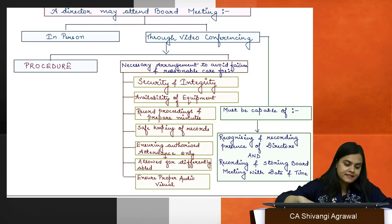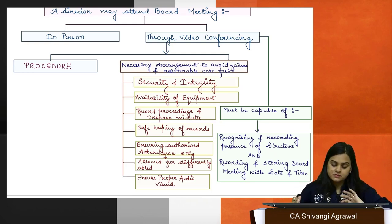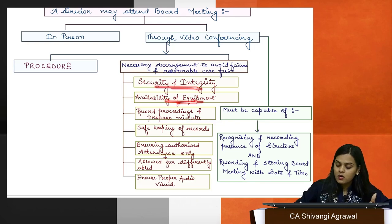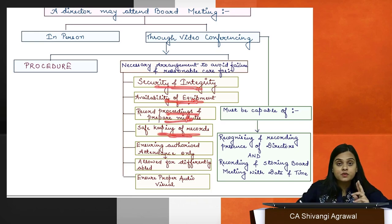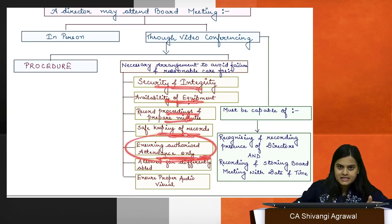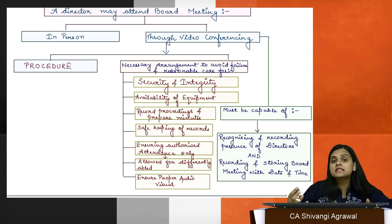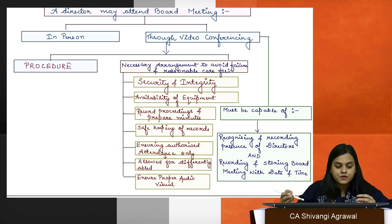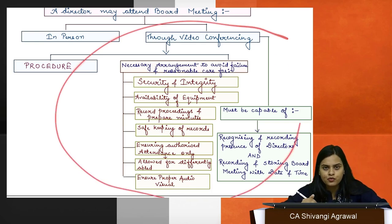Requirements for virtual board meetings include: security and integrity, availability of equipment, recording of all proceedings and preparation of minutes, safe storage of records, and ensuring authorized attendance only. However, if a person is disabled and requests an attendant, that attendant will be allowed. Proper audio-visual setup must be ensured. These requirements must be fulfilled before proceeding with video conferencing.